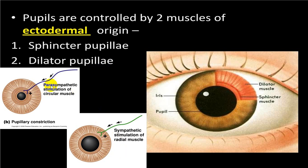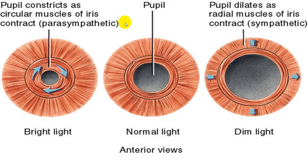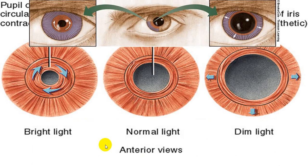Circular fibers are controlled by parasympathetic fibers arising from the Edinger-Westphal nucleus of the third cranial nerve, while sympathetic fibers from the cervical area supply the perpendicular fibers. In bright light the pupil will constrict, in dim light or darkness the pupil will dilate — dilation done by sympathetic and constriction by parasympathetic. Both pupils will be of equal size.